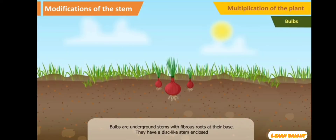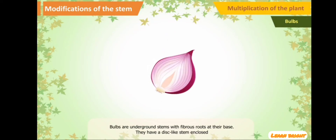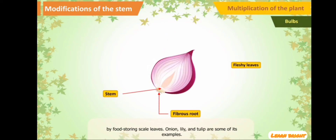Bulbs are underground stems with fibrous roots at their base. They have a disc-like stem enclosed by food-storing scale leaves. Onion, lily, and tulip are some examples.